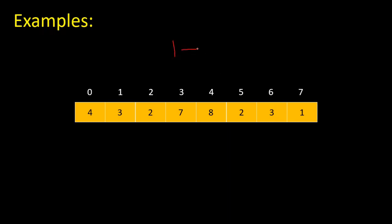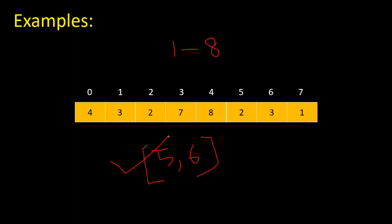If you're given this particular array, the length is eight, so the minimum element is one and the maximum is eight. We have to find the missing elements between one and eight. We see we have one, two, three, four — we don't have five and six. So in this array we are missing two elements: five and six. Now, how can we find missing elements in constant space complexity and linear time complexity?